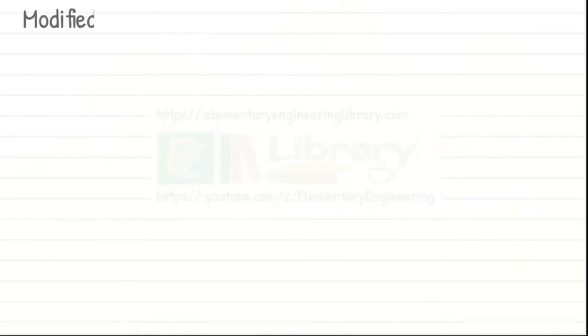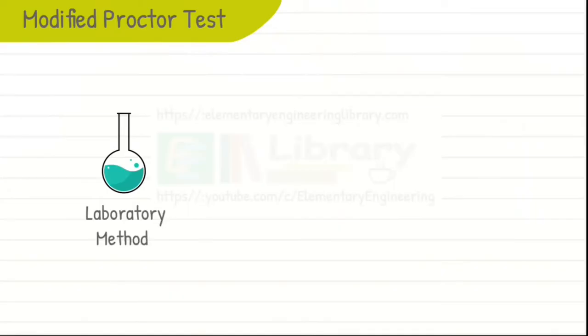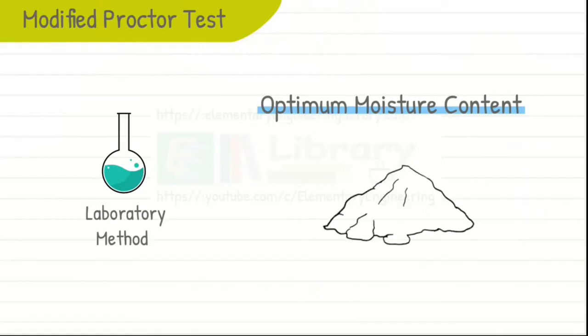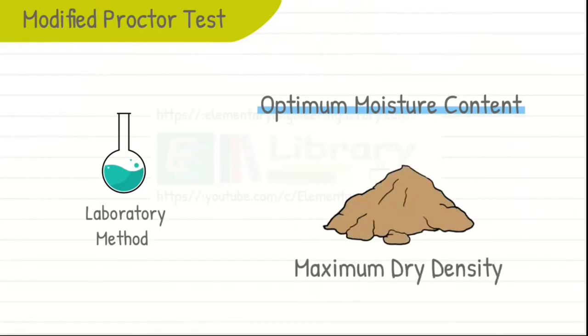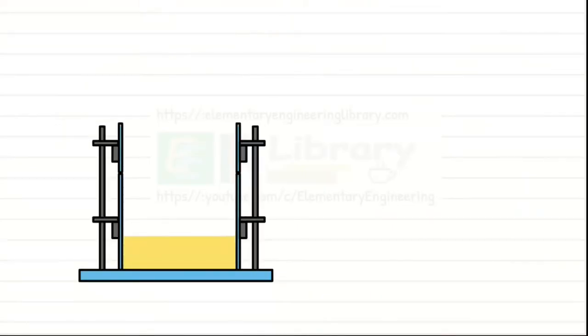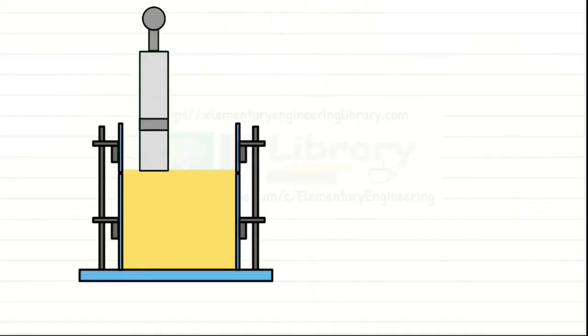The modified proctor compaction test is a laboratory method used to determine the optimum moisture content at which the soil achieves its maximum dry density. In this test, a constant volume of soil mass is compacted using a rammer just like we did in standard proctor test.